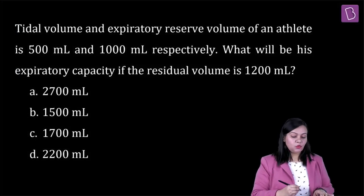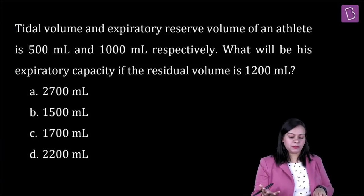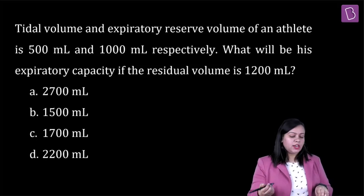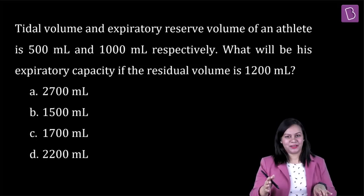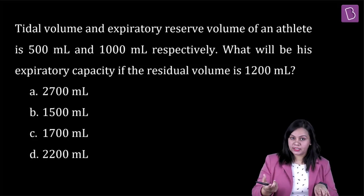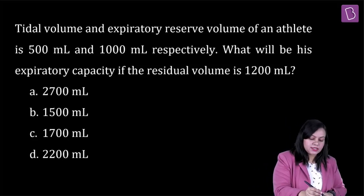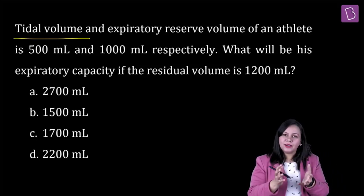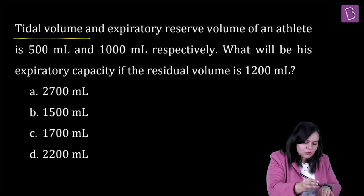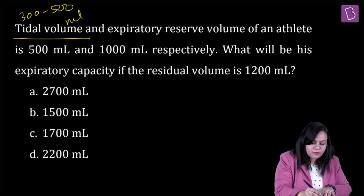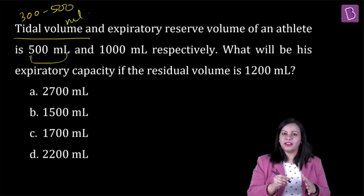Let's see this question: Tidal volume and expiratory reserve volume of an athlete is 500 ml and 1000 ml respectively. What will be his expiratory capacity if the residual volume is 1200 ml? This is a straightforward question from your chapter on breathing and exchange of gases. Tidal volume is the volume of air inhaled or exhaled in one respiratory cycle, typically 300 to 500 ml — here given as 500 ml for an athlete.